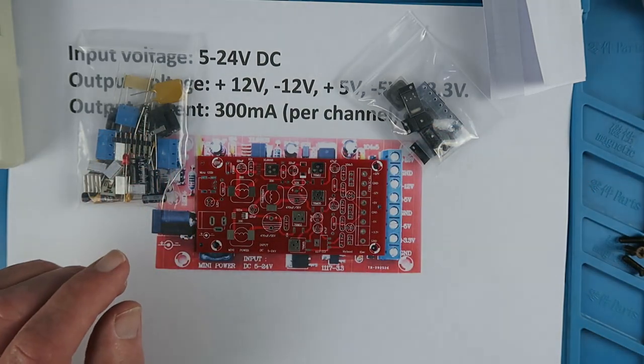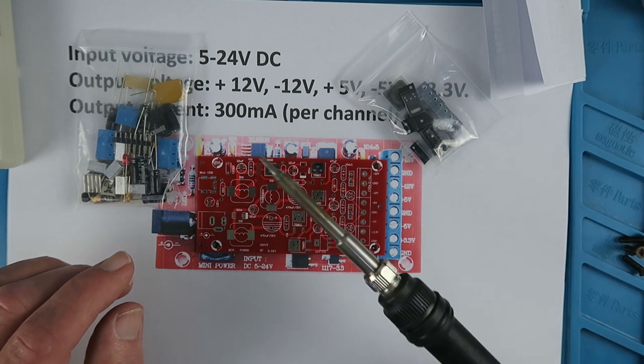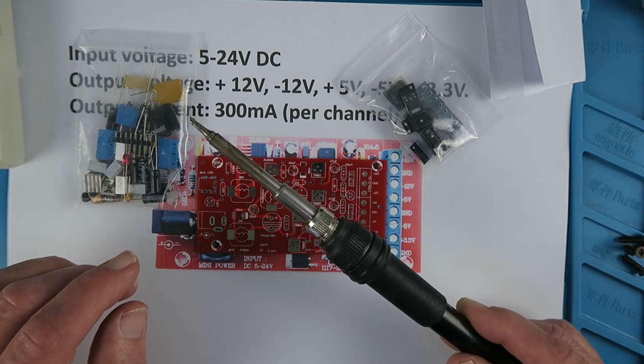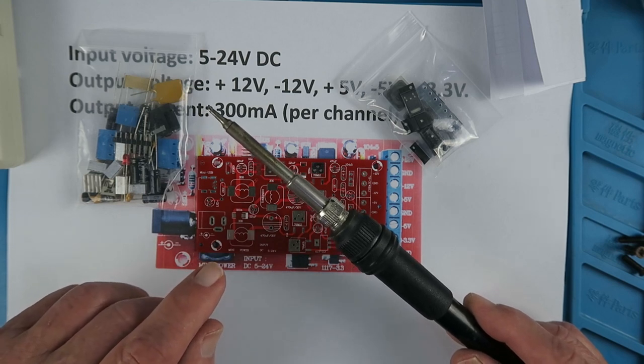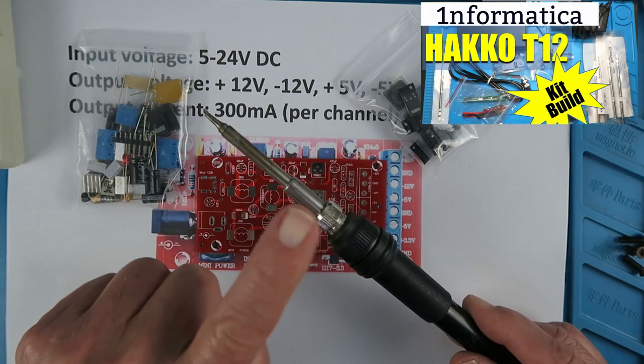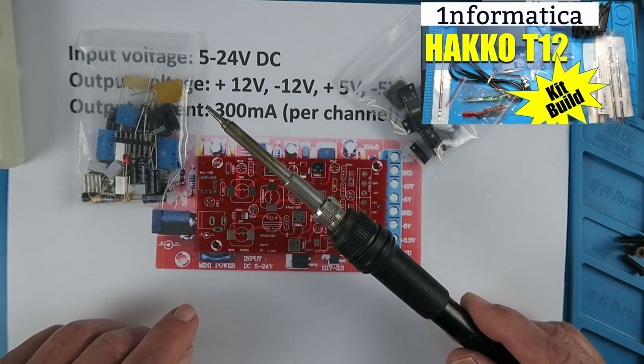One thing that you will need from the get-go is a decent soldering iron, temperature controlled. And I built this Haku T12 soldering iron from a kit also. And you'll see links in the description and a link up there as well.